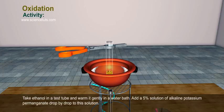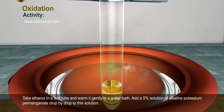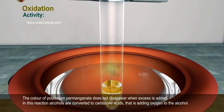Take ethanol in a test tube and warm it gently in a water bath. Add a 5% solution of alkaline potassium permanganate drop by drop to this solution. The color of potassium permanganate does not disappear when excess is added.